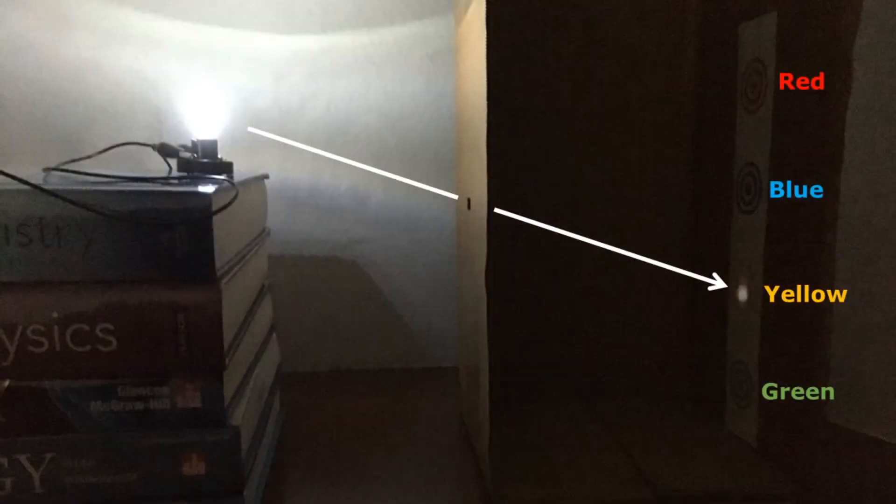When we turn down the lights in the room and turn on the light bulb, we see that's exactly what happens — the dot of light appears on the yellow target because light travels in a straight line. I'm sure that's what you and your classmates came up with.